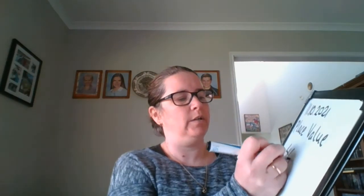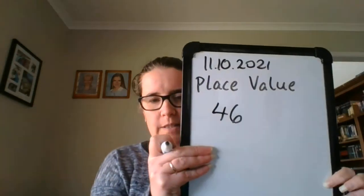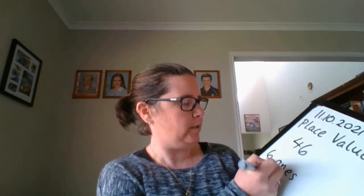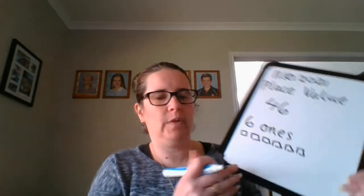So I'm going to roll my two dice and I've got a four and a six. So I'm going to write that down — it makes the number forty-six. Four and then the six. So this six here, that's the ones. In this number there are six ones and I'm going to draw them like this — six ones.